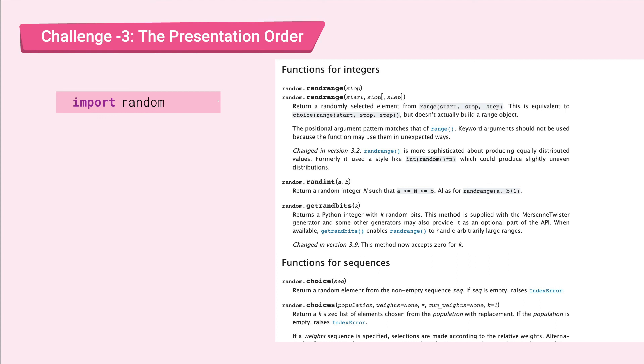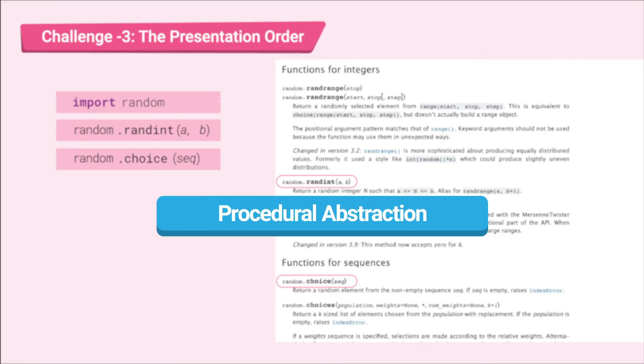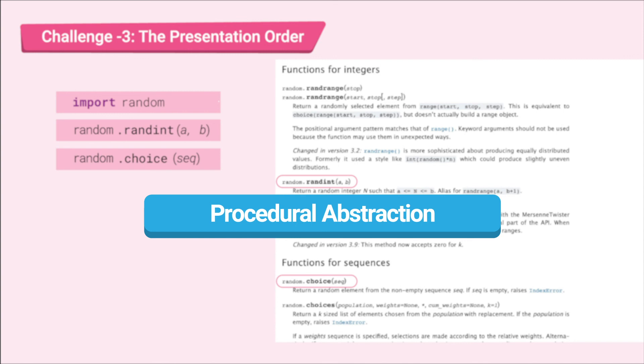What's neat about using these modules created by others is that we don't need to know how it works and still be able to use it just by calling its name. So as long as we know what it does, there's no need to know how it does its job. This is called the procedural abstraction. And the documentation site is where you can look up the instructions for using these modules.